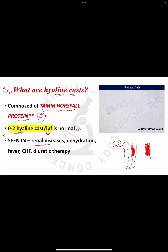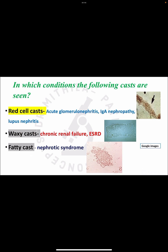Hyaline casts are increased in various renal diseases, as well as in conditions of dehydration, fever, congestive heart failure, and diuretic therapy. Red cell casts are seen in acute glomerulonephritis, IgA nephropathy, and lupus nephritis. Waxy casts are seen in end-stage renal disease or chronic renal failure. Fatty casts are seen in nephrotic syndrome, where lipiduria is also present.